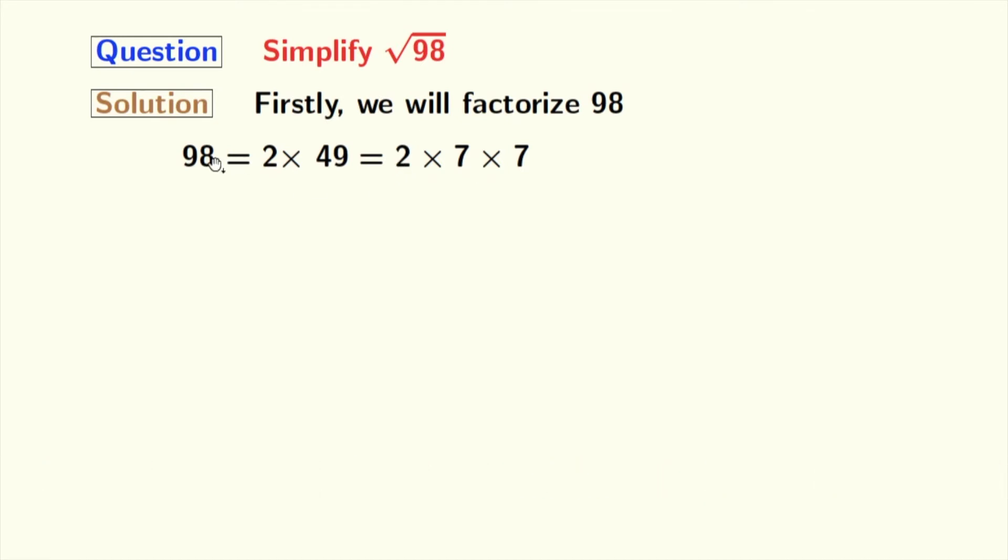Now we will take square root on both sides. Doing that, we get square root of 98 is equal to square root of 2 times 7 times 7.